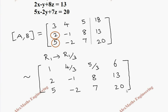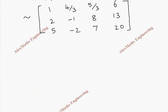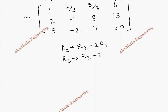Now we have to make two zeros in the indicated places below the 1. For that we take R2, and R2 is subtracted from 2 times R1 — that is, multiplying R1 by 2 and subtracting — to give 0. In the same way, R3 becomes R3 minus 5·R1.